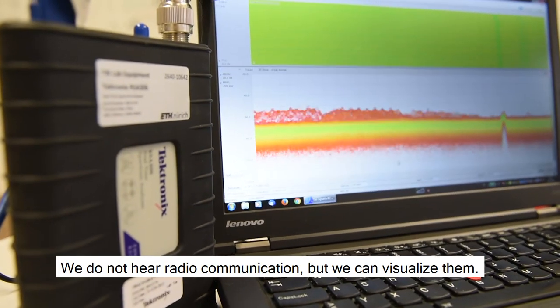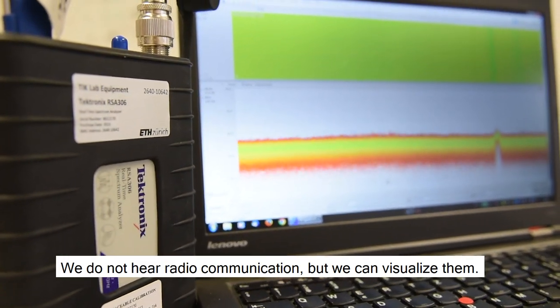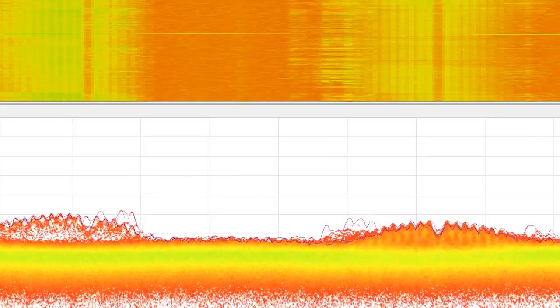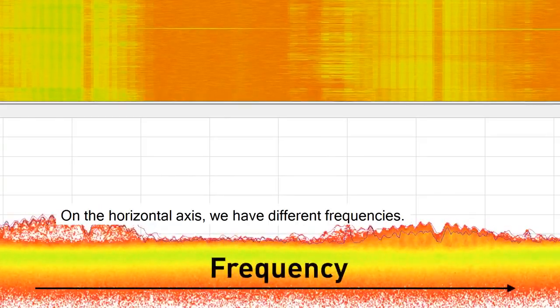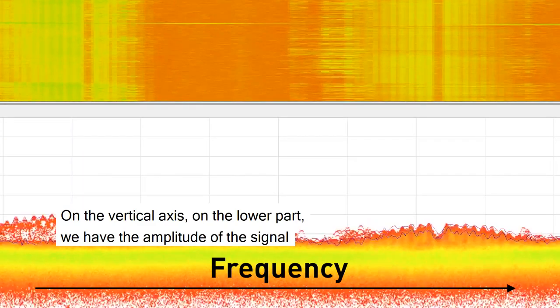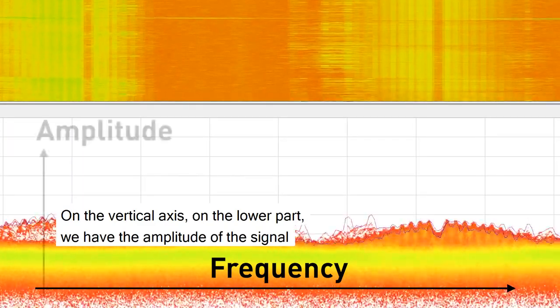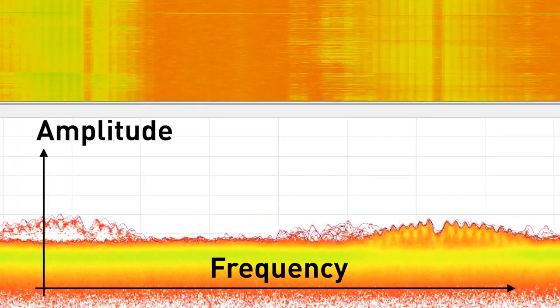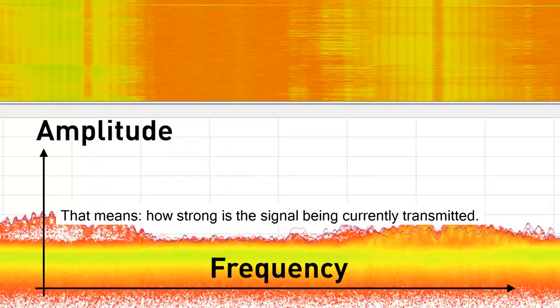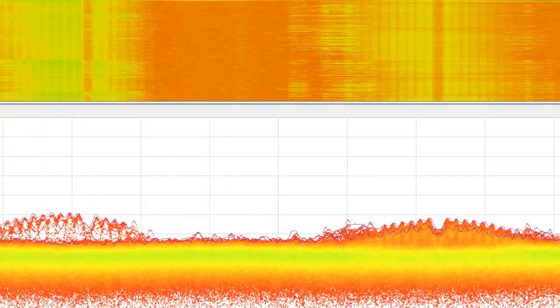We do not hear radio communications, but we can visualize them. On the horizontal axis, we have different frequencies. And on the vertical axis, on the lower part, we have the amplitude of the signal. That means, how strong is the signal being currently transmitted?